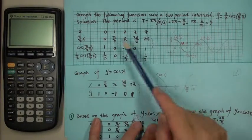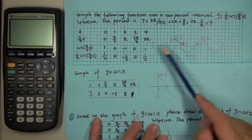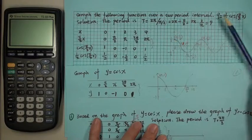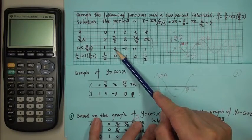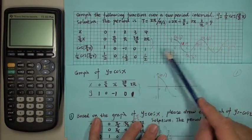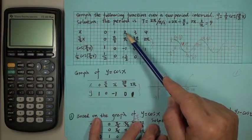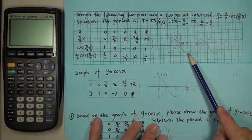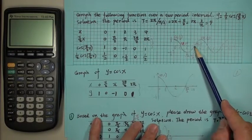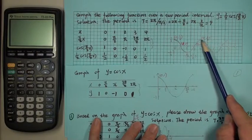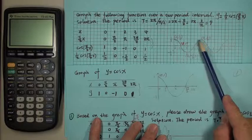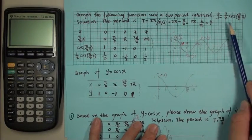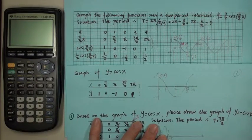So when x is zero, y is one-half — point (0, 1/2) is plotted here. When x is one, y is zero — point (1, 0). When x is two, y is negative one-half — point (2, −1/2). Then (3, 0), and (4, 1/2). That completes one period from zero to four. Then the pattern repeats for a second period, giving us the two-period interval graph.